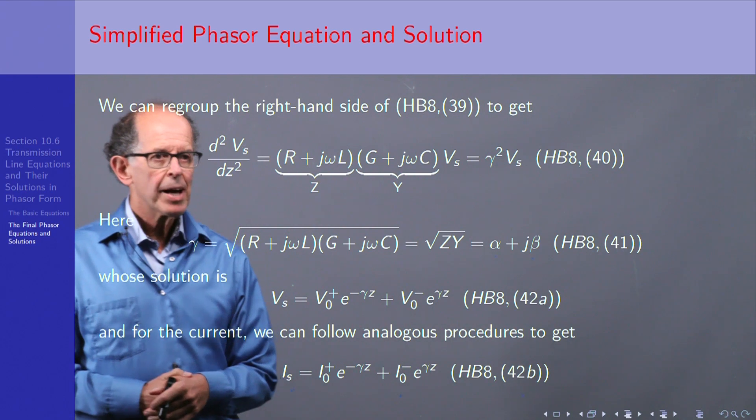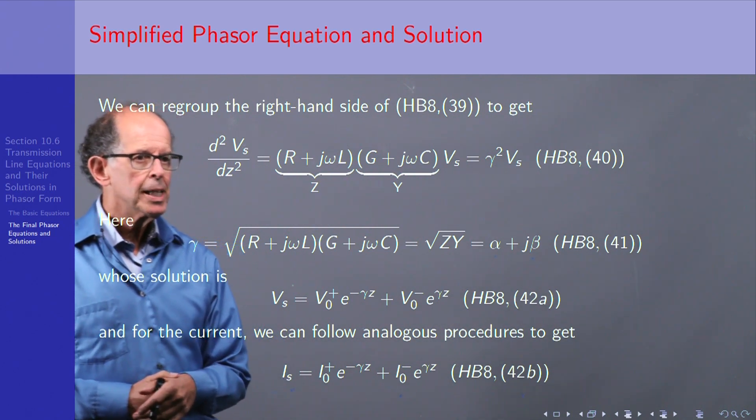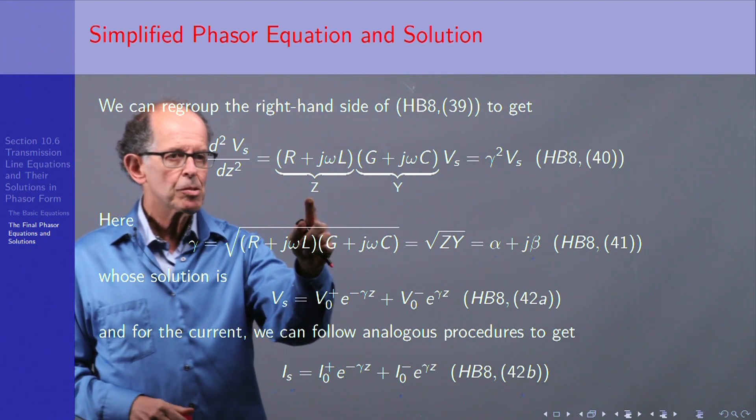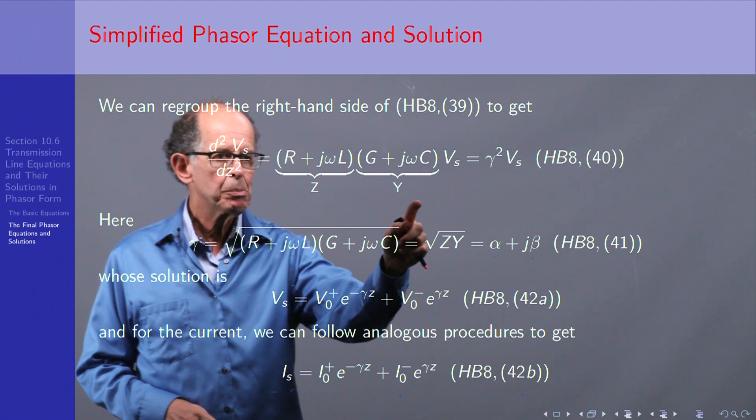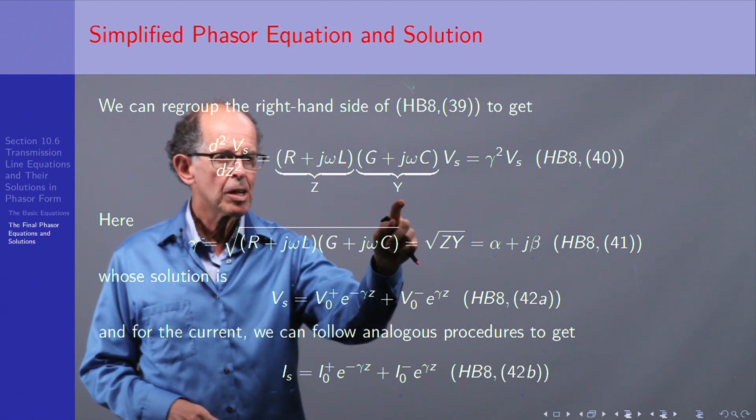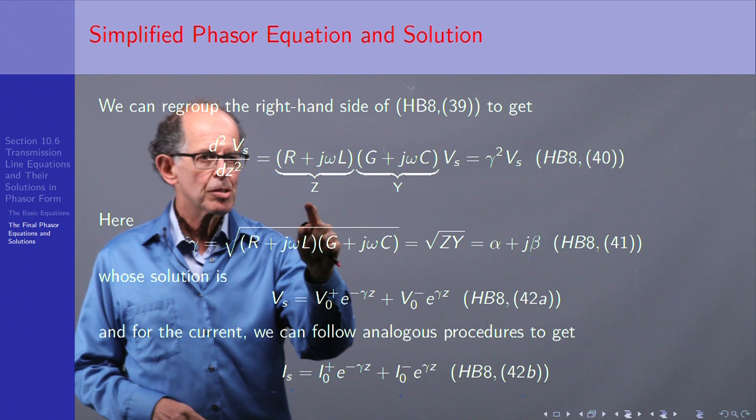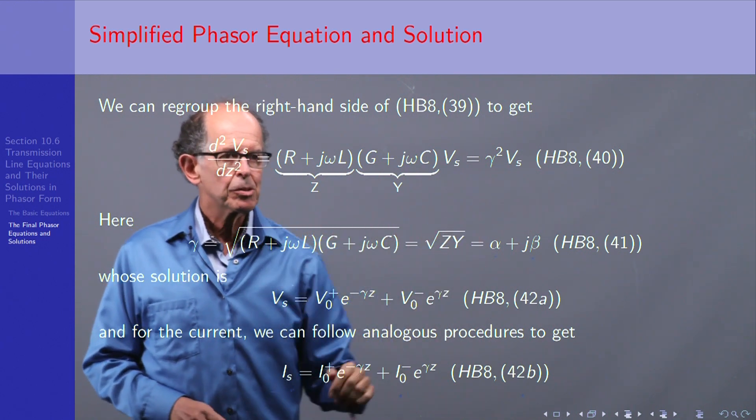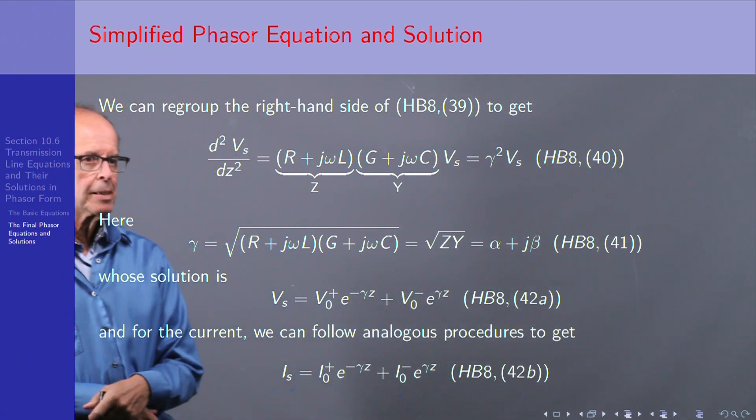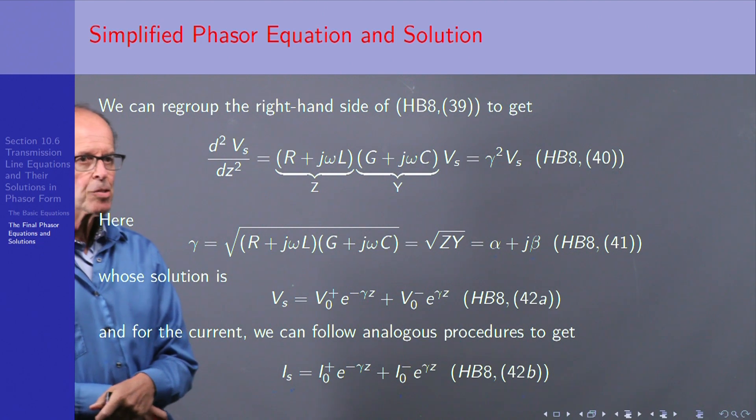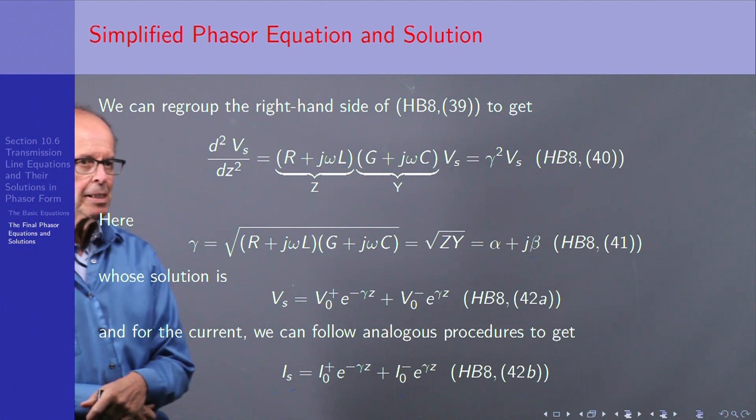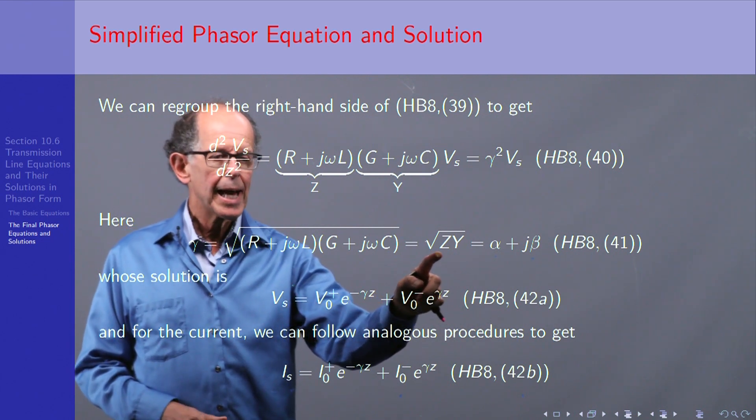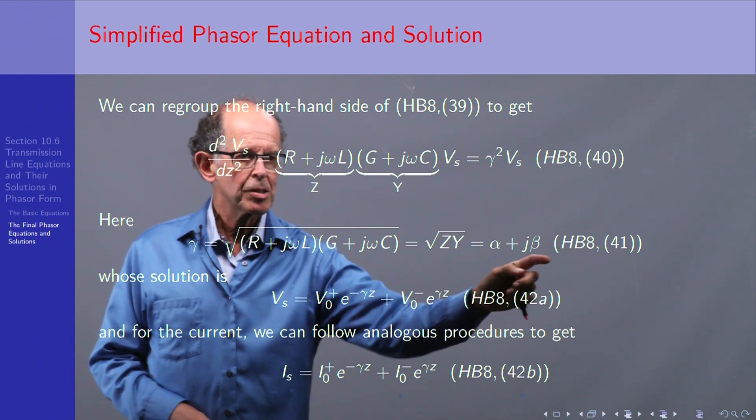And you can see the factorization, that's number 40. You can see that Z is impedance, that's all per unit length, and this is the complex admittance. So this is the shunt part, that's the series impedance part, and the product is equal to what we're going to call gamma squared. So gamma on the next line is the square root of that thing, which in short form is square root of ZY. And it's a complex number in general.